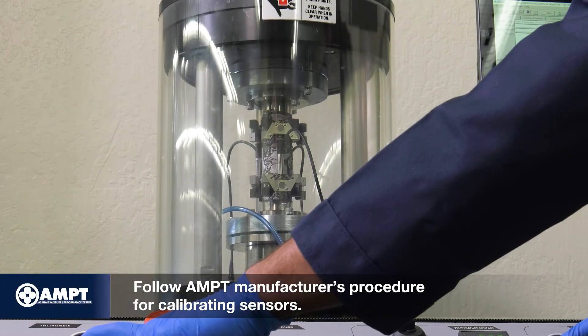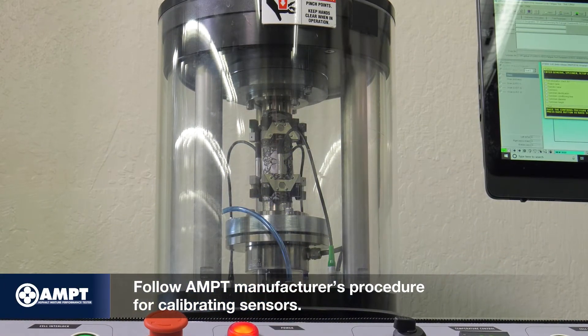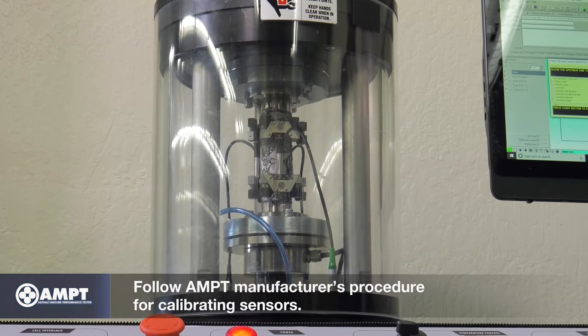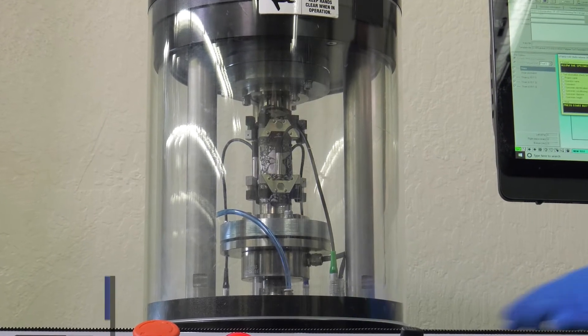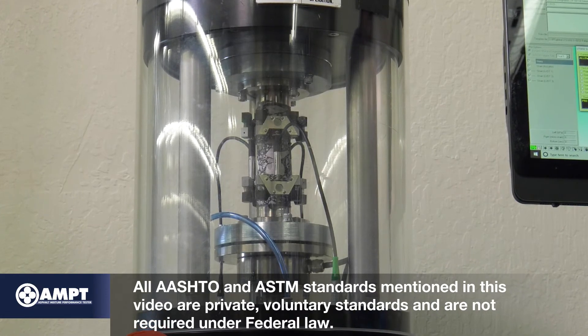Calculate the installation time, which is the time between opening the external environmental chamber and closing the AMPT conditioning chamber to install the specimen. Using AASHTO TP-133, determine the AMPT conditioning time for the specimen in the chamber before starting the test.